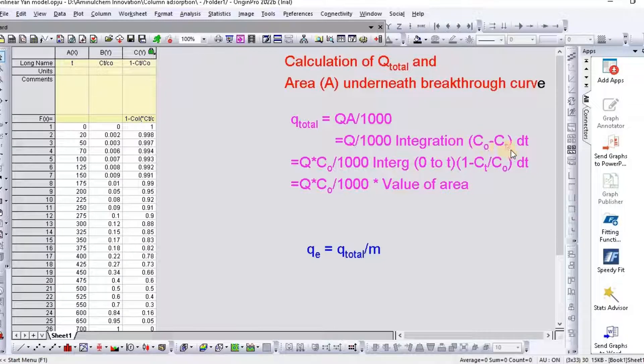C0 minus Ct dt equal to Q C0 divided by 1000 integration 0 to T, 1 minus Ct divided by C0 dt.